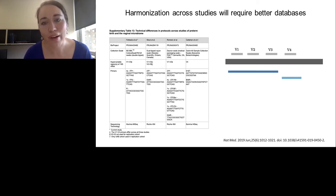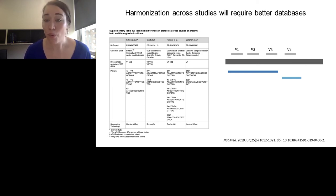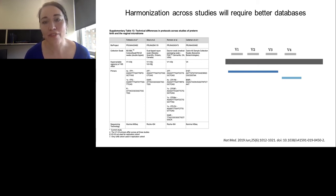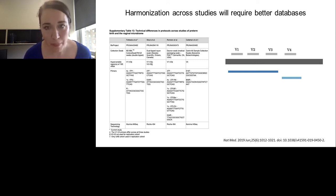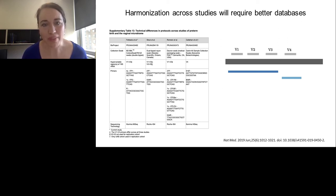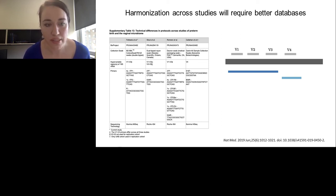One role for long-read sequencing is that there are organisms that have never been cultivated where we don't yet have a full-length read coupling the V1 to V3 region with V4, for example. So it's impossible to actually link data between these studies. There's quite a bit of opportunity to try to harmonize across studies using these sorts of data.